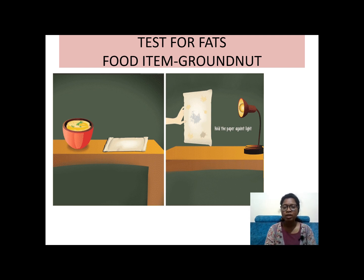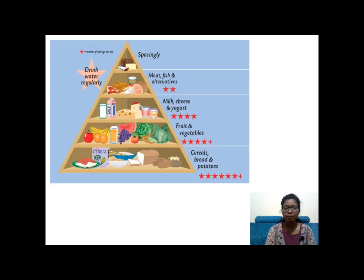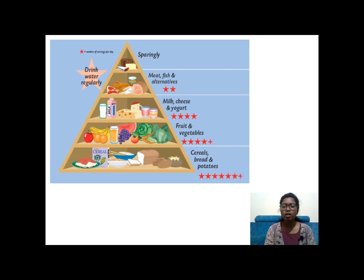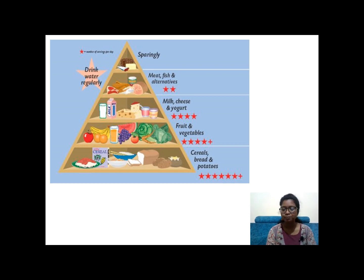This is the food pyramid, which shows what food items we should eat more and what we should eat less. More stars indicate foods to eat more; fewer stars indicate foods to eat less. We have to drink water regularly. Check the food pyramid to see which items to eat more and which to take less.